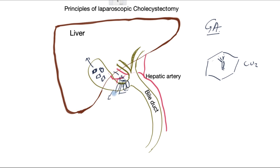Once that is achieved, the surgeon begins mobilization of the gallbladder, trying to retain the gallstones inside, and uses diathermy — heat energy — to dissect and release the gallbladder from the side and underneath, moving it upwards and outwards.